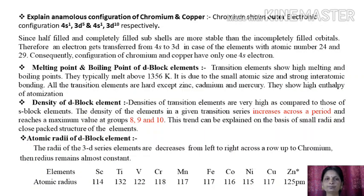Now let us discuss the anomalous configuration of chromium and copper, as this is one more important question asked in board exams. Chromium shows outer electronic configuration 4s¹ 3d⁵ and copper shows 4s¹ 3d¹⁰ respectively. Since half-filled and completely filled subshells are more stable than incompletely filled orbitals, therefore an electron gets transferred from 4s to 3d in the case of elements with atomic numbers 24 and 29. Consequently, configurations of chromium and copper have only one 4s electron.